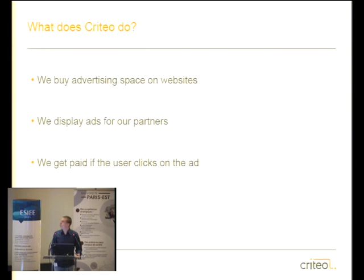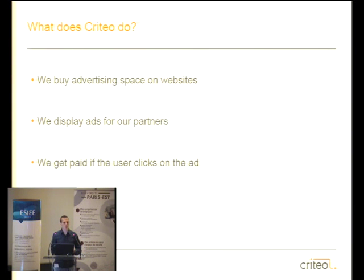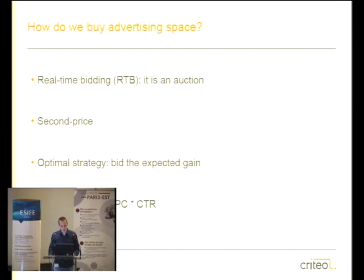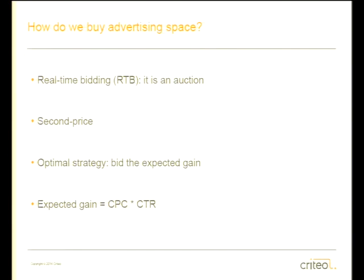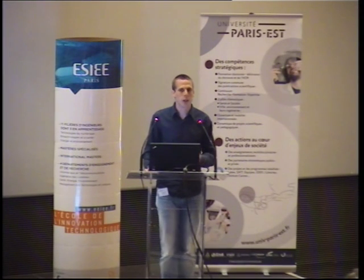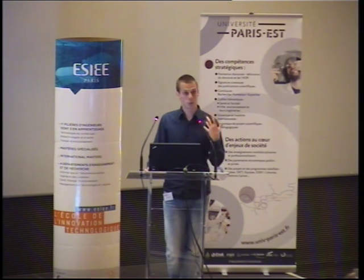What does Criteo do? Probably most of you don't know. It's an advertising company — we buy advertising space on websites, display ads for partners, and we only get paid if the user clicks on the ad. So we take the risk for the advertiser. How do we buy advertising space? Most of the time it's a real-time auction — an auction house asks all companies like Criteo how much they want to bid, the winner gets the space and pays the second price.